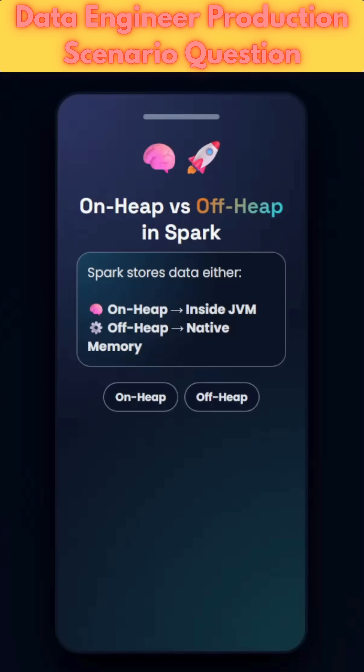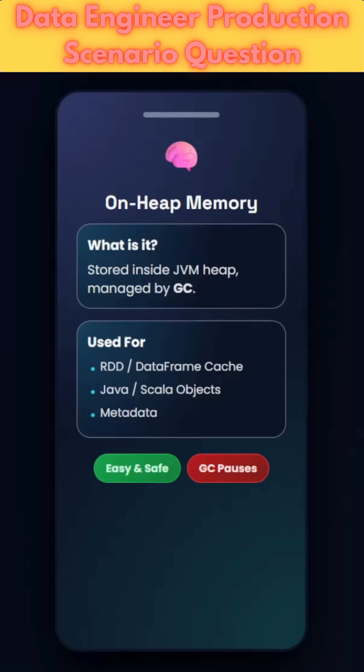It might be related to data skew problems. Let us assume the data is in proper shape, and since it is a production job, we do not have the chance to go back and rewrite the code. In such cases, one option is off-heap memory — we can leverage off-heap memory in Spark.